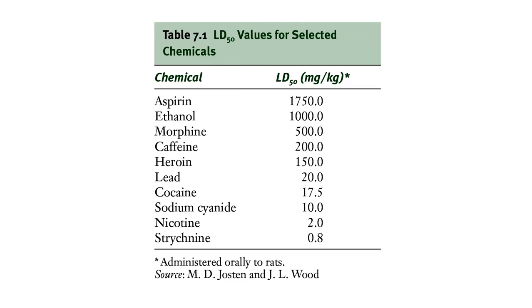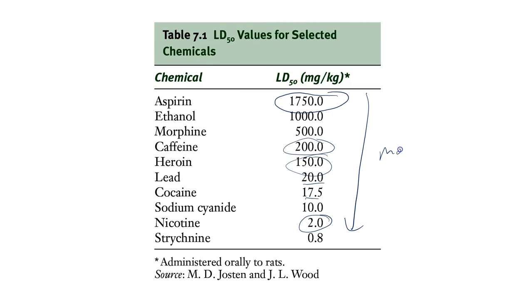Looking at various chemicals — drugs and over-the-counter items versus more dangerous substances — we can compare LD50 levels. Aspirin is lethal; it just takes a pretty high dosage. Nicotine, one of the addictive compounds in tobacco, is extremely toxic — we're just lucky that in tobacco it's only available in very small quantities. You can also look at the lethal doses of caffeine, heroin, lead, or cocaine. Remember: the lower the LD50 level, the more toxic the material.